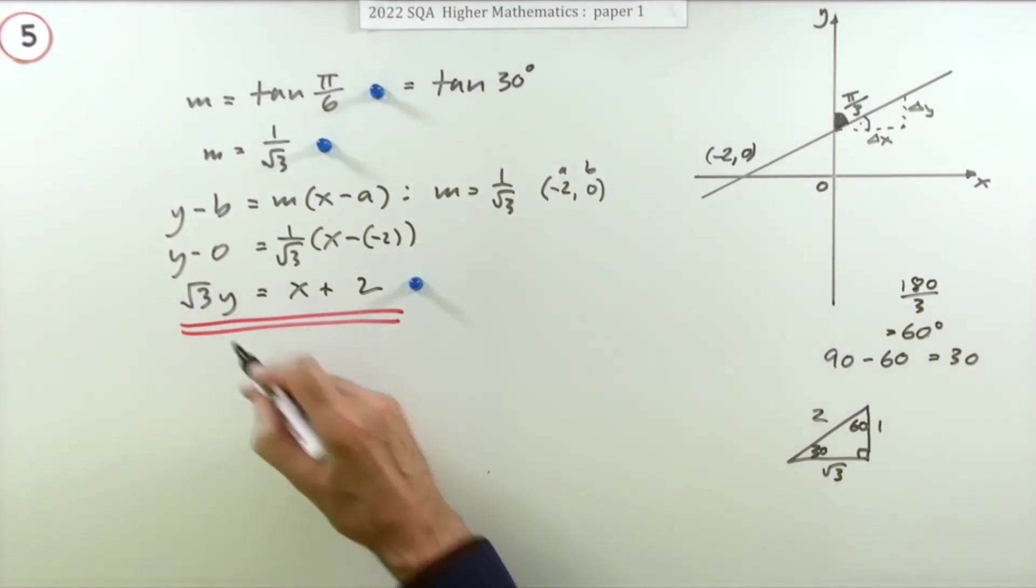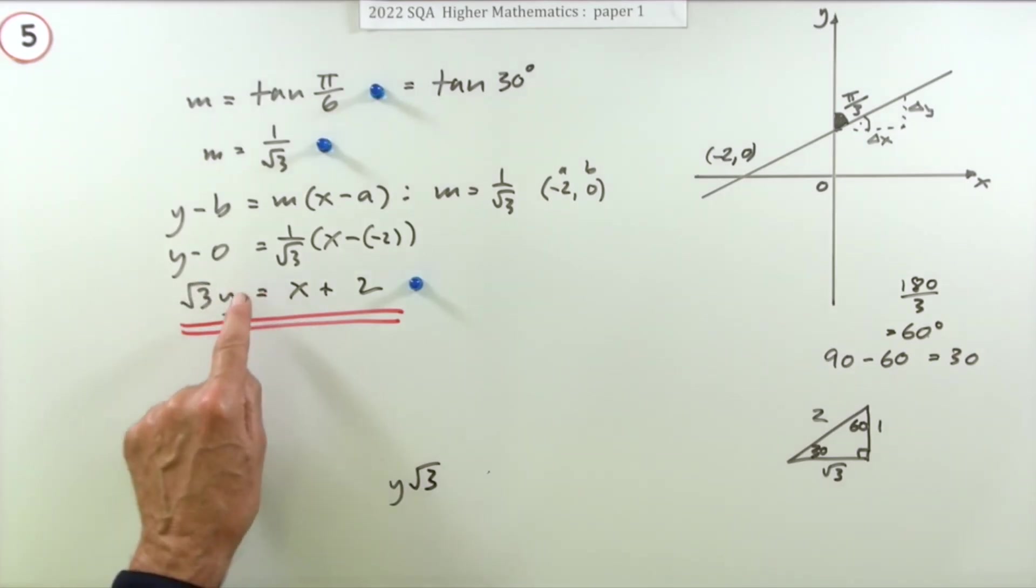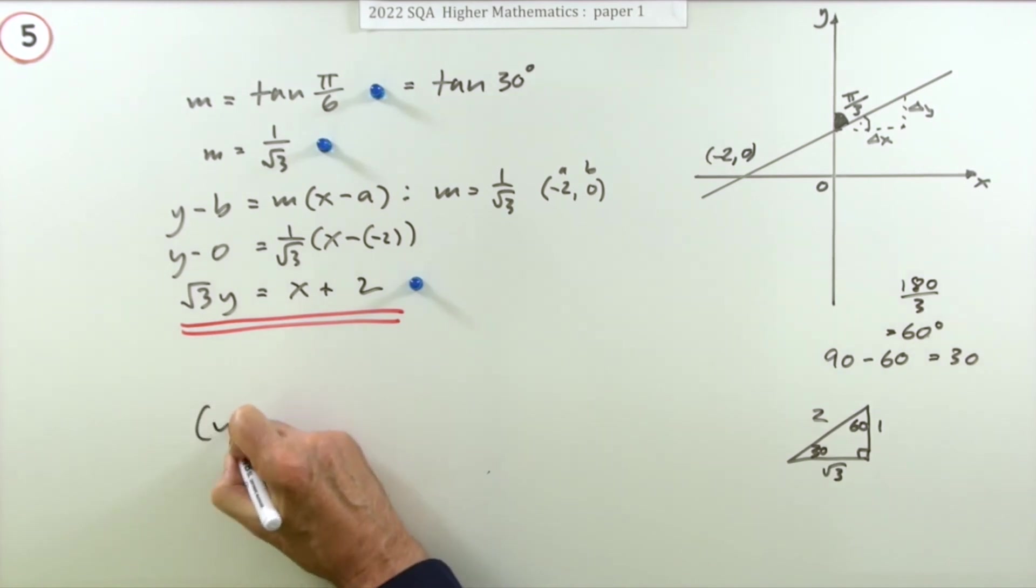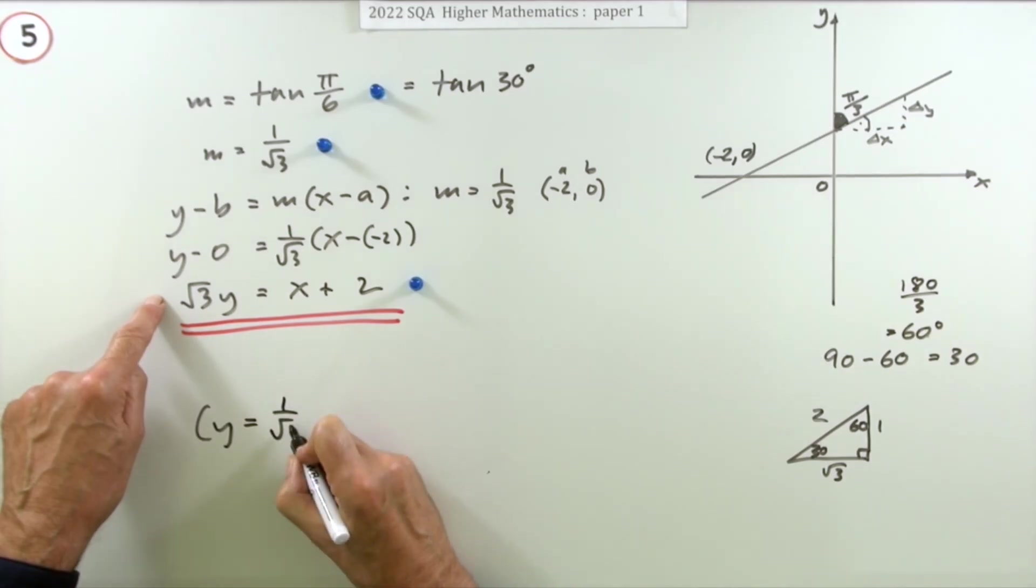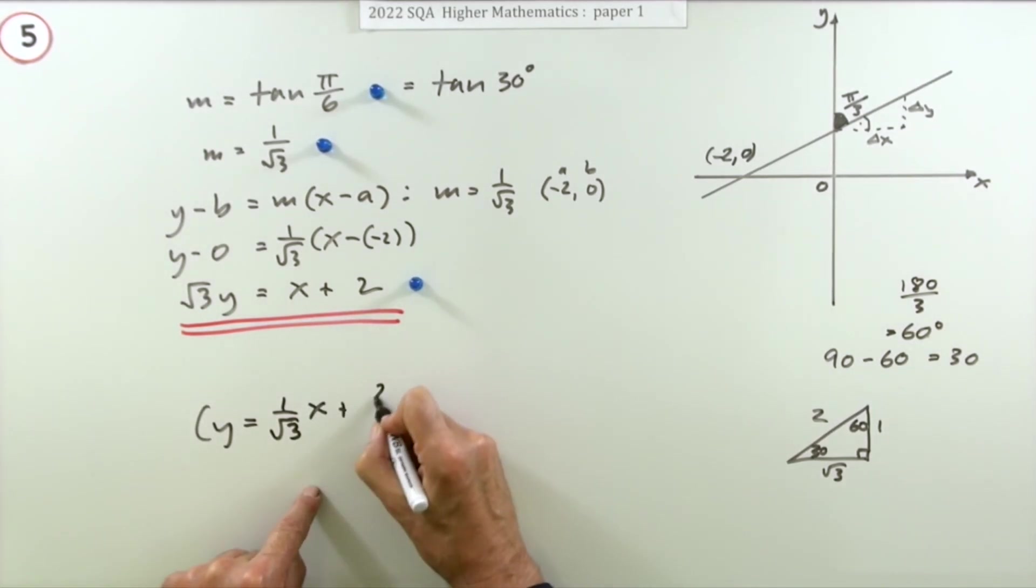I notice in the marking scheme they've got it written as y√3, which is not the usual order, because usually the convention is coefficient then variable. So I guess the reason they might have been putting that down is so you don't confuse it with √(3y), as if the 3 and the y were both in a bracket. The alternative would be to put it in the form y = mx + c, in which case you'd have these fractions: (1/√3)x + 2/√3.